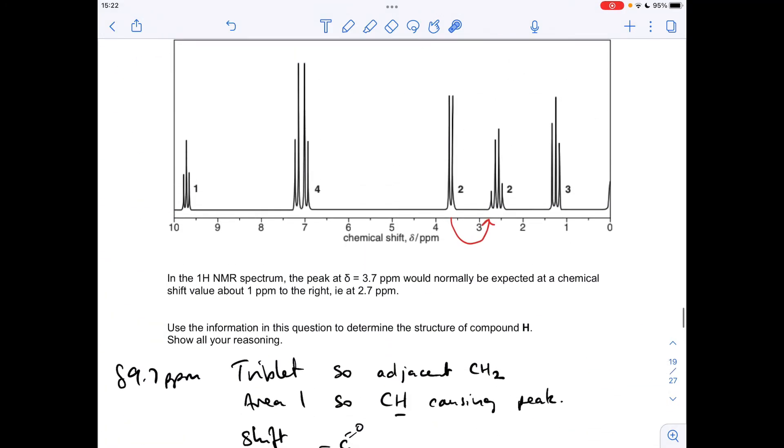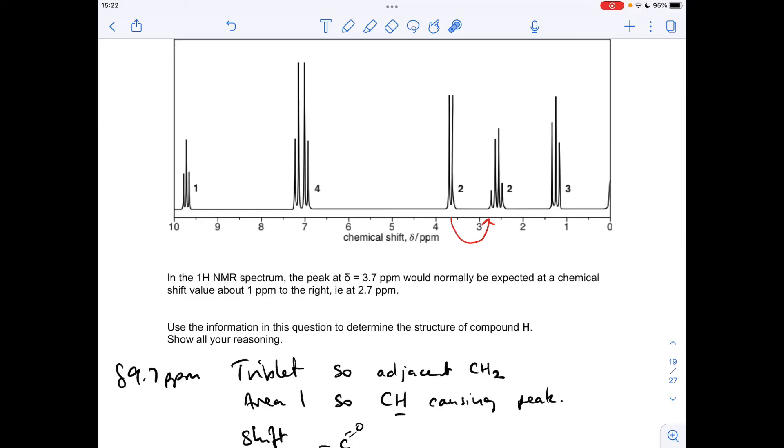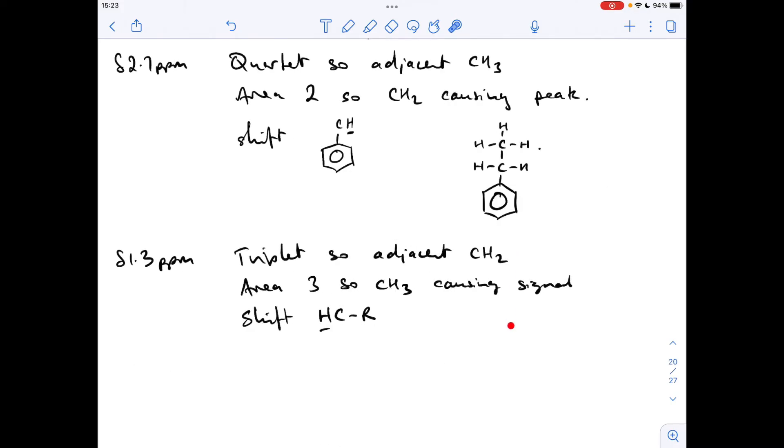So if we look at the spectrum, indeed we do have a triplet in the H to C to R environment, and it has got the area of 3. Okay, so there's that little bit written up. I'm not going to draw this structure out again, because basically we've already got it here. So that signal at 1.3 ppm is due to these protons here.